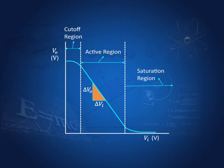In the cutoff region, the transistor acts as a switch in the off position — there is no current. In the saturation region, the current is maximum but there is no change in the current, so the transistor is in the fully on position — it acts as a switch in the on position. In the active region, which is almost linear, the transistor functions as an amplifier.